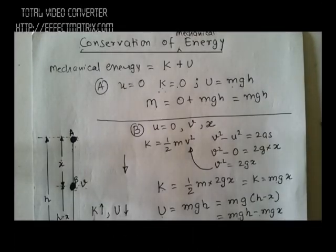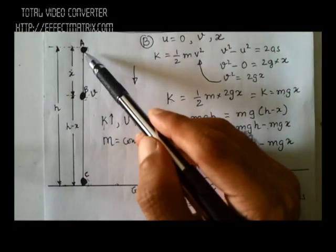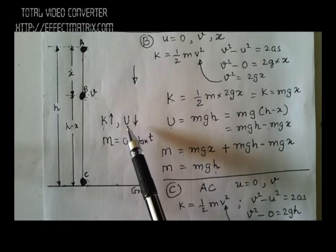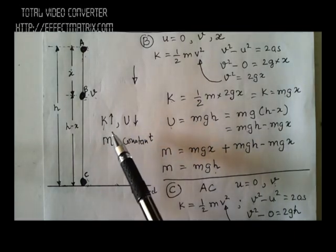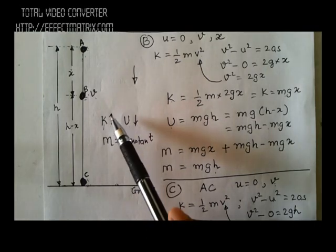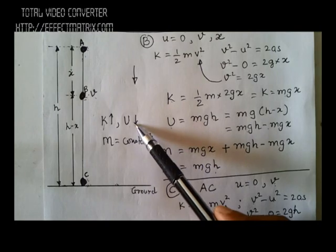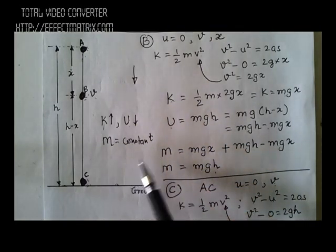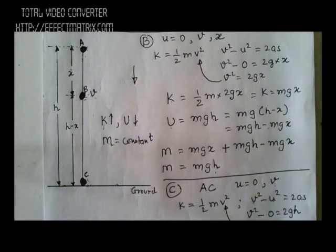In the previous video we discussed a situation where a body is falling freely, and we observed that the sum of kinetic and potential energy remains constant — that is the law of conservation of mechanical energy. Kinetic energy keeps on increasing as the body moves down, and the potential energy decreases, but the sum remains constant.